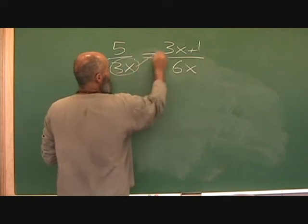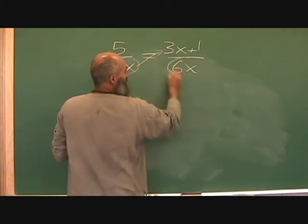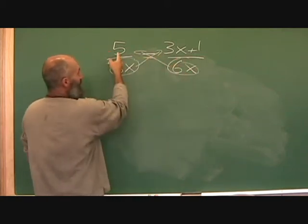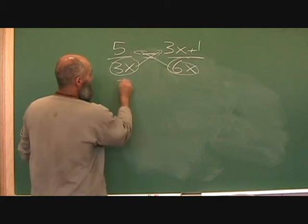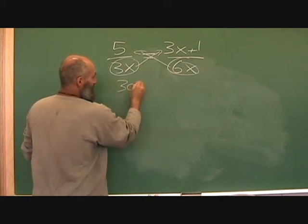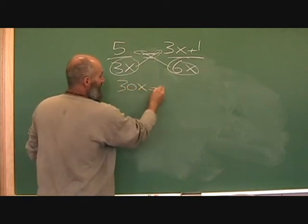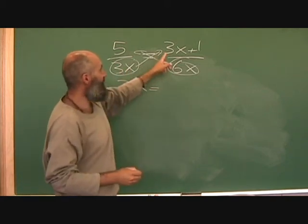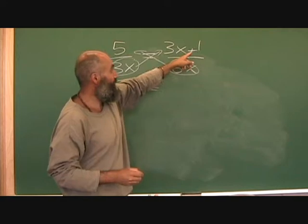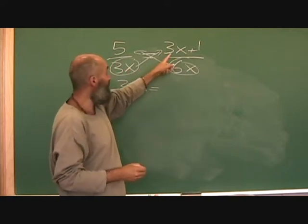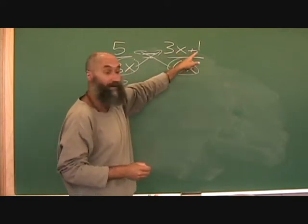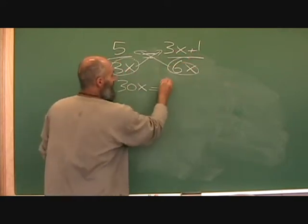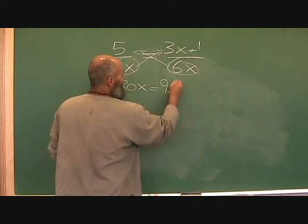So we grab this guy, grab this guy, and cross-multiply. So 5 times 6x is going to be 30x, equal to 3x times (3x + 1). This term comes up and multiplies both terms, so this is going to be 9x squared...